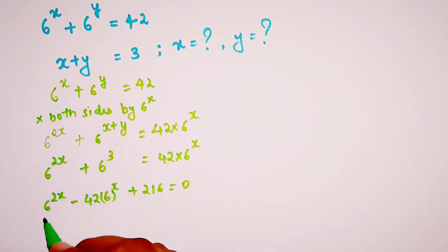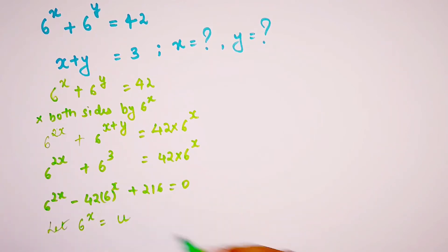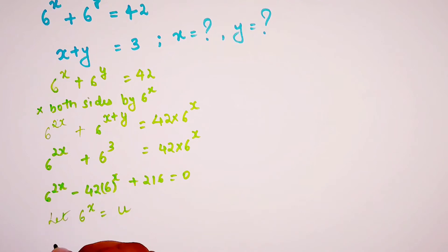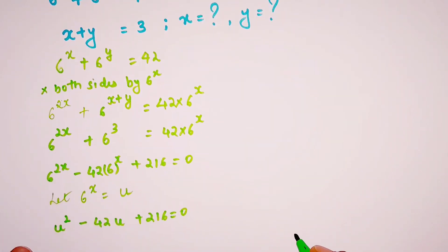We'll write: let 6^x = u. When we do that, we get u² - 42u + 216 = 0.